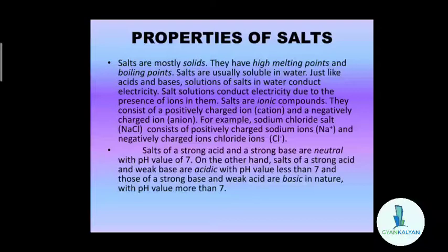Now the pH of salts. Salts of a strong acid and a strong base are neutral with a pH of 7. When a strong acid reacts with a strong base, the salt formed has a pH of 7 — it is neutral. If a salt is formed from a strong acid and a weak base, the salt is acidic with a pH less than 7. On the other hand, if a strong base and a weak acid react, they form a salt with a pH more than 7.